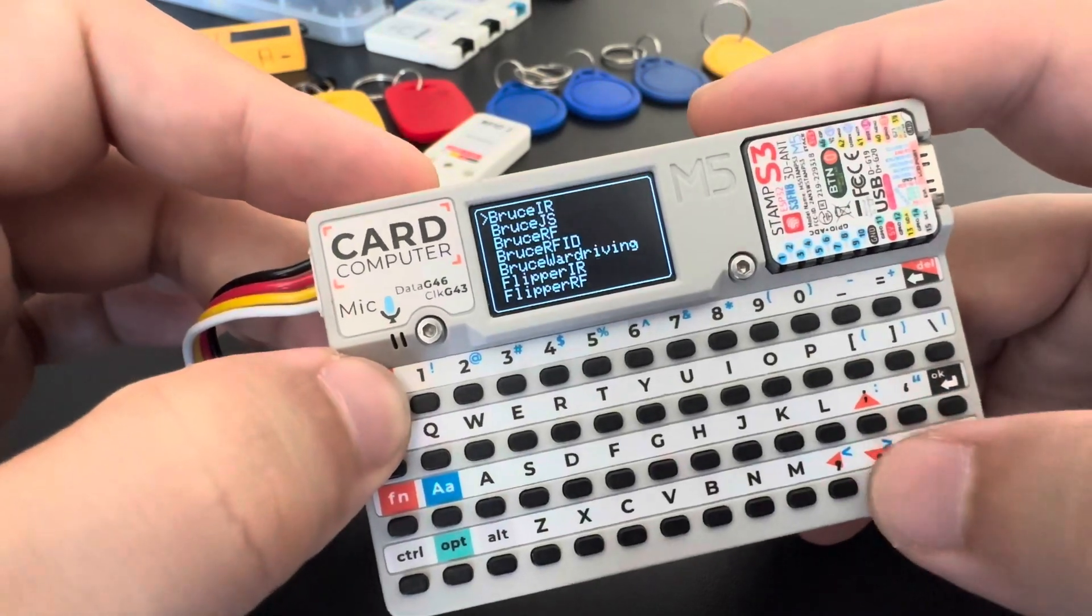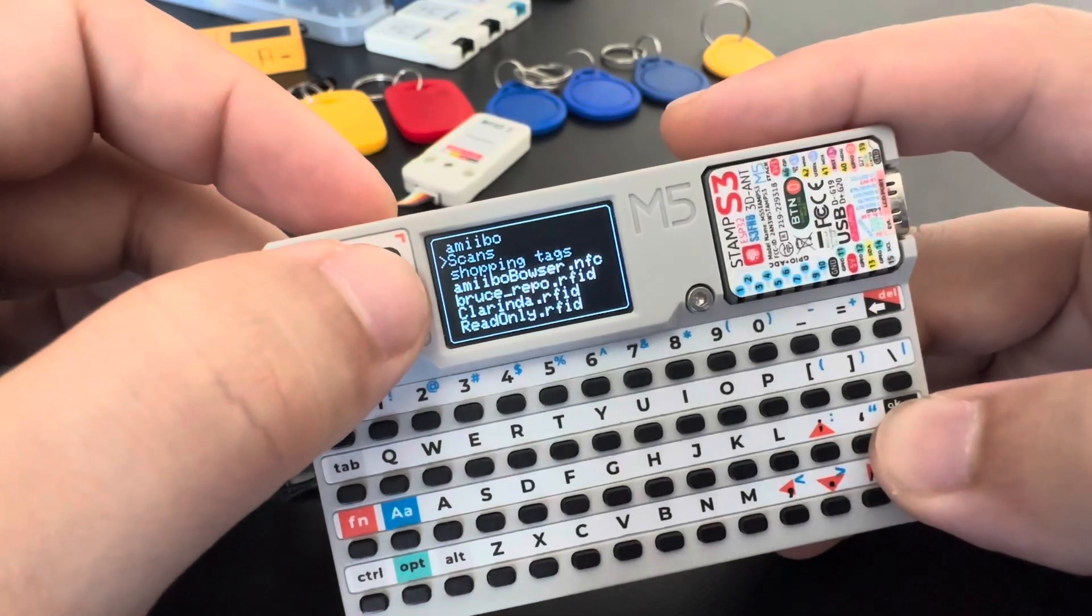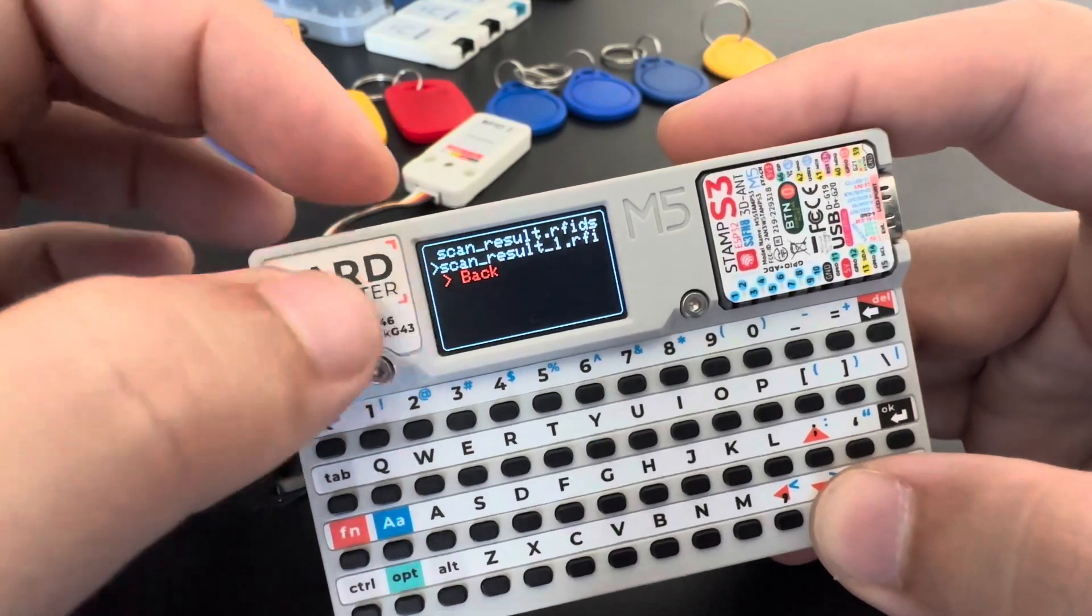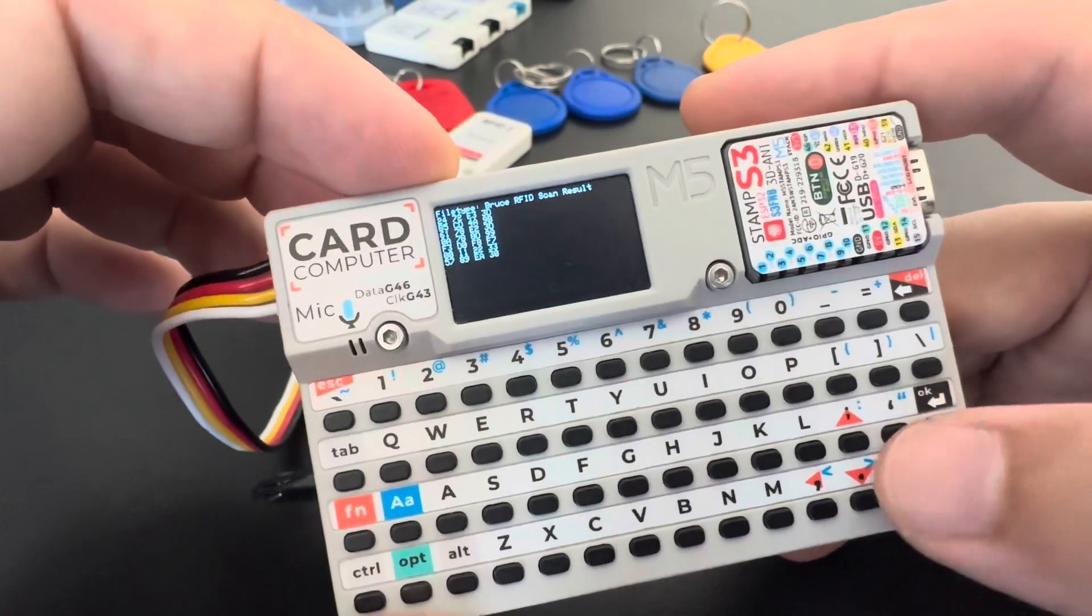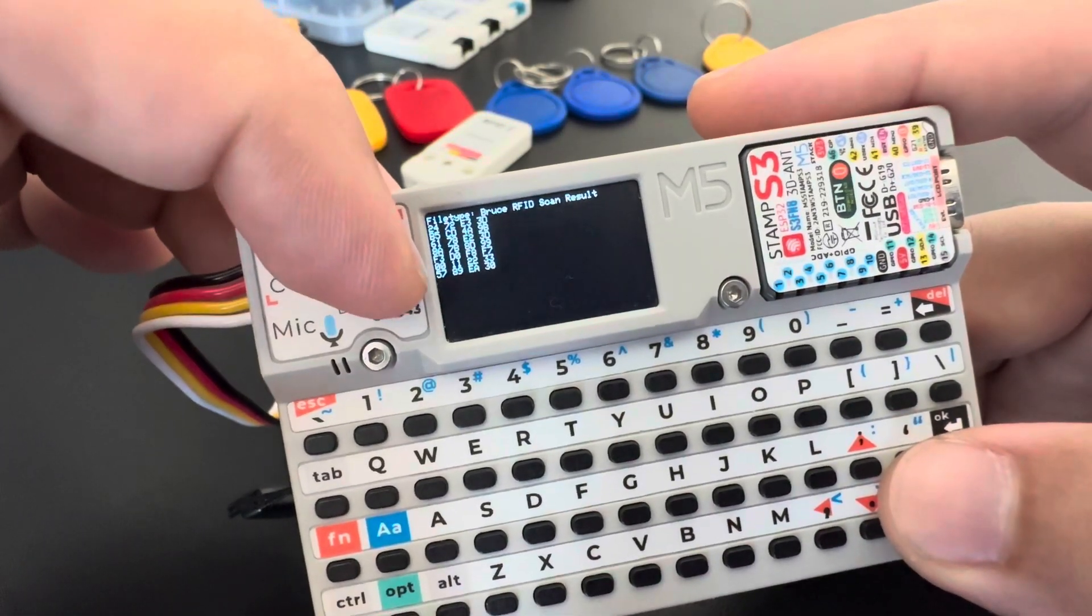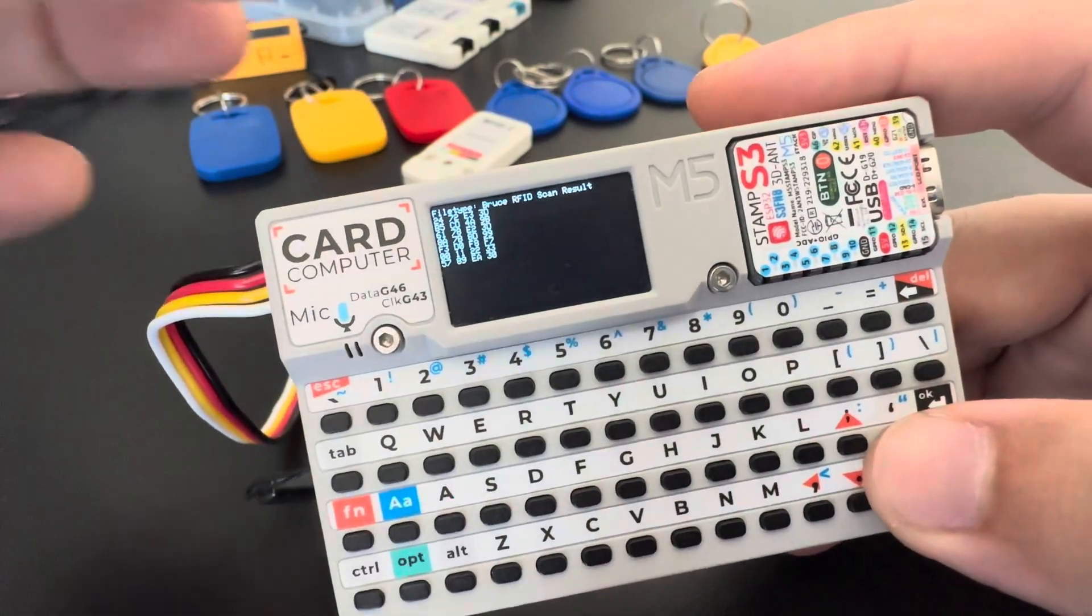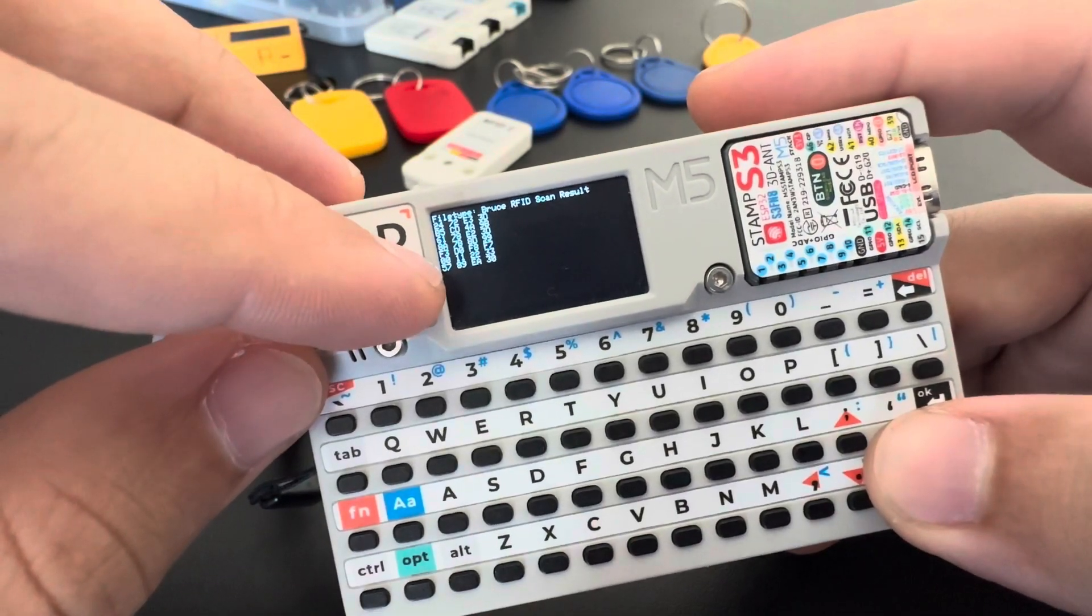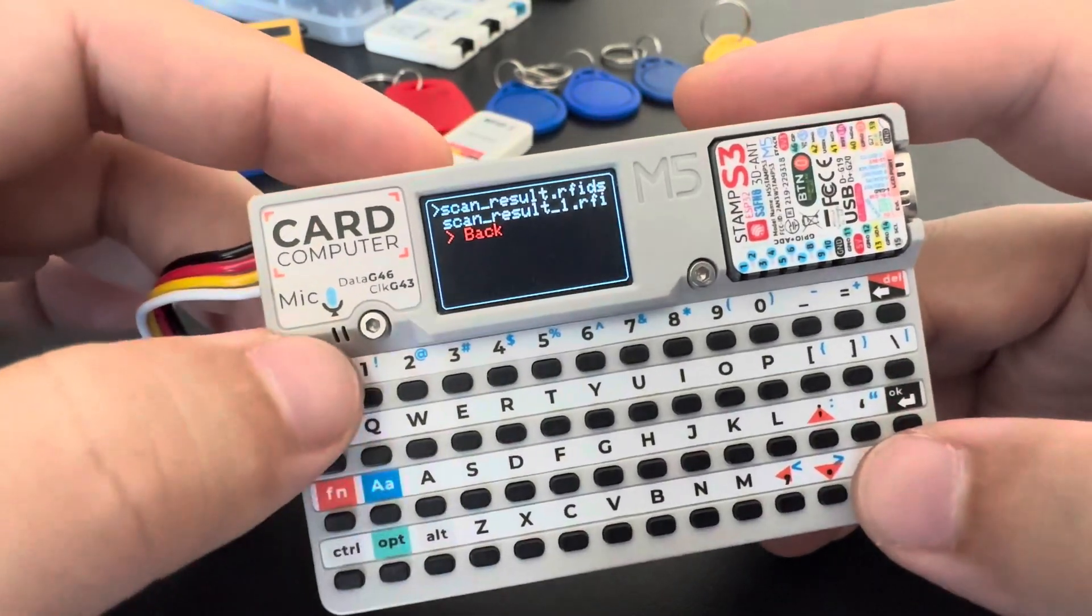So let's go to others, SD card, Bruce, RFID. I have the scans folder and the last one is scan result one. So if I open and view file, I have here all of the UIDs. So I can just check the file and grab one here. For example, I have the 00112233.